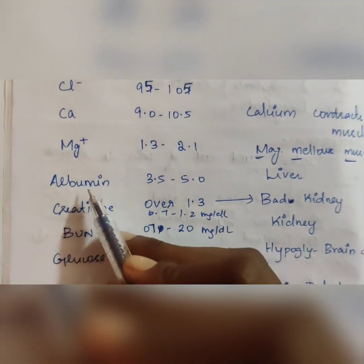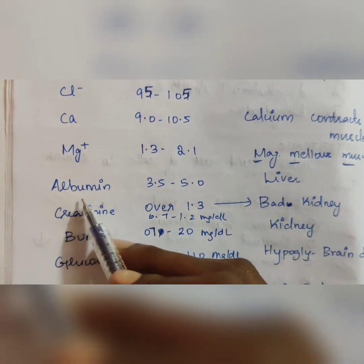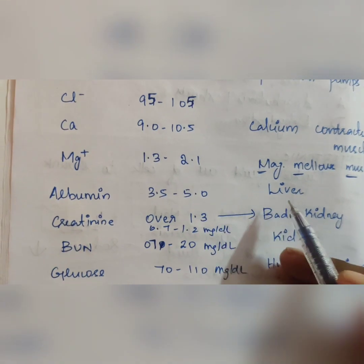Next, albumin normal range of 3.5 to 5.0. If there is a difference in albumin level, it directly refers to any inflammation or changes in liver.